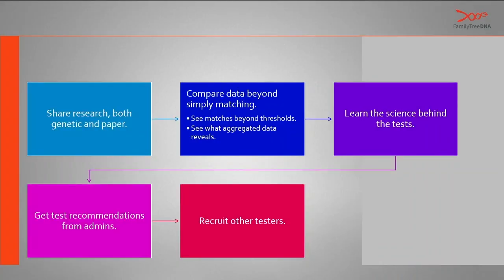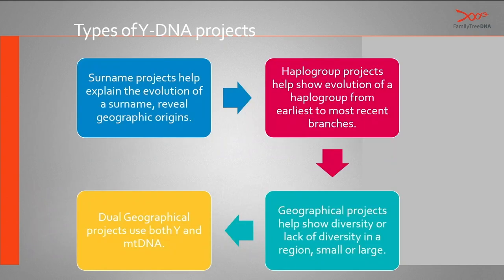Group projects allow you to share your research, both genetic and paper, and compare data simply beyond matching. You can also get test recommendations from some of the best researchers in the world, and they may help you recruit other testers. There are various types of DNA projects: surname projects help the evolution of a surname and reveal geographical origins; next, we have haplogroup projects, geographical projects, and dual geographical projects.